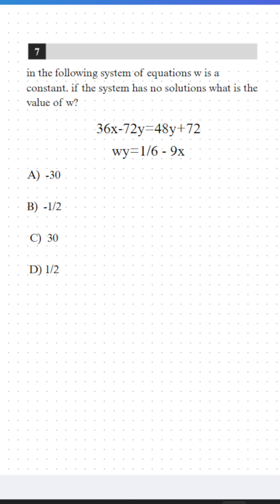Well, since we know that the system has no solution, we know that these two lines are parallel to each other because they never intersect and they never touch each other and form a solution.